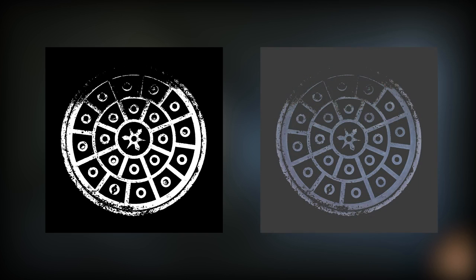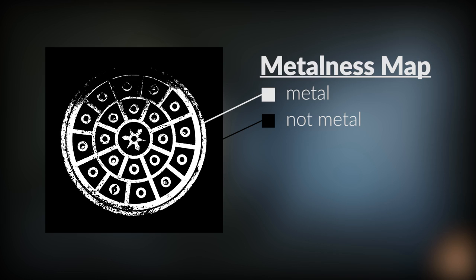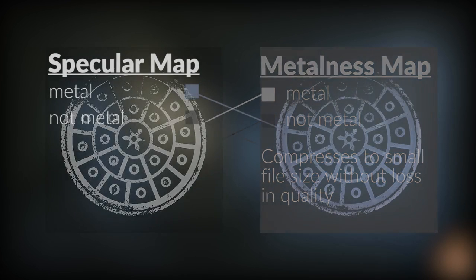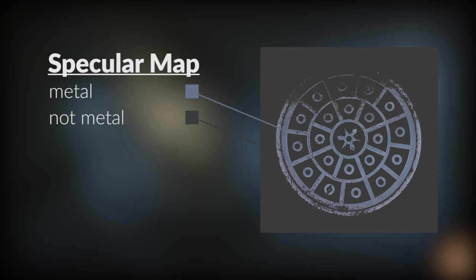The big obvious difference here is between metalness and specular maps, as the names imply. Metalness maps are only black and white to show which parts of the surface are metal or non-metal. In the metalness workflow, the color of the metal comes from the base color. Specular maps, on the other hand, do have colors in the areas that should be metal, so in a specular workflow, the color of the metal comes from the specular map and not the base color.